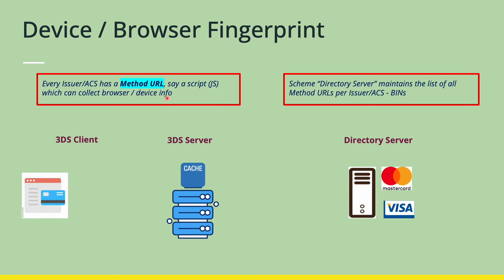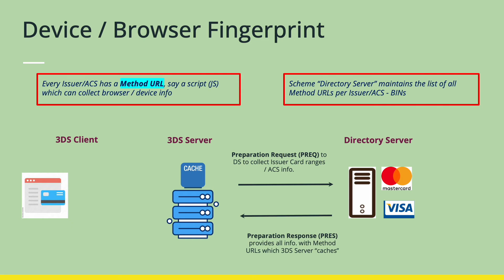Every issuer or ACS hosts this Method URL, and the ACS provides their Method URL information for every BIN to the Directory Servers. So Directory Servers have a database of all the Method URLs across every single BIN. The 3DS servers — generally the merchant gateways — communicate with the Directory Server as part of a message called a preparation request or PREC, where the 3DS servers request the Method URL information and other data, which the ACS provides back. As part of this PREC and PRES, the 3DS servers cache the Method URL information across all card ranges.